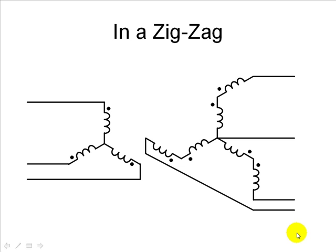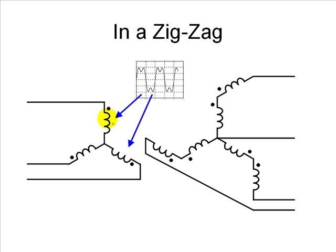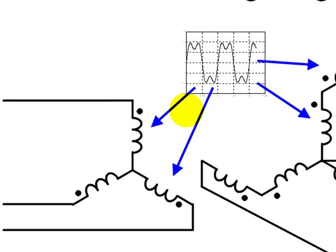Now we take three single-phase transformers, each with three coils — primary, secondary, and tertiary — and for simplicity assume they all have the same number of turns. We connect the primary in Y and the secondary in a zigzag (Z). The center of the Y on the primary is not connected to the source, which means the triple frequency components of the magnetization current will not flow. As a result, the induced voltages in those coils will not be sinusoidal, and the same is true for the secondary and tertiary coils as well.